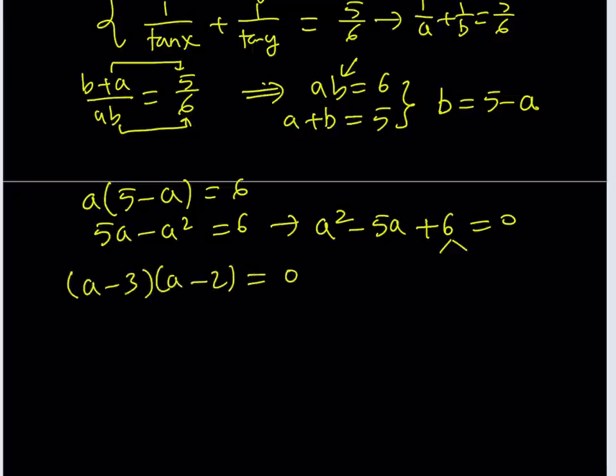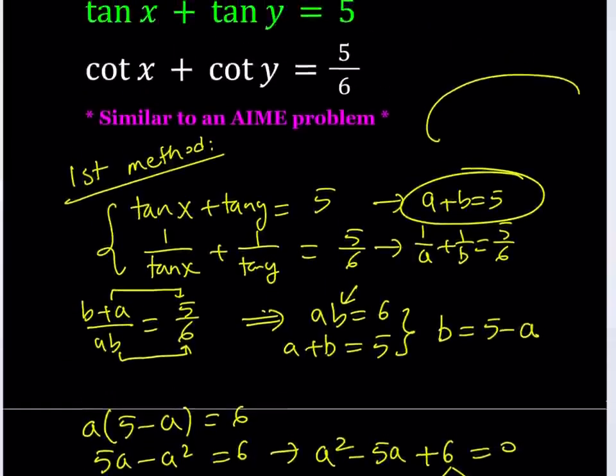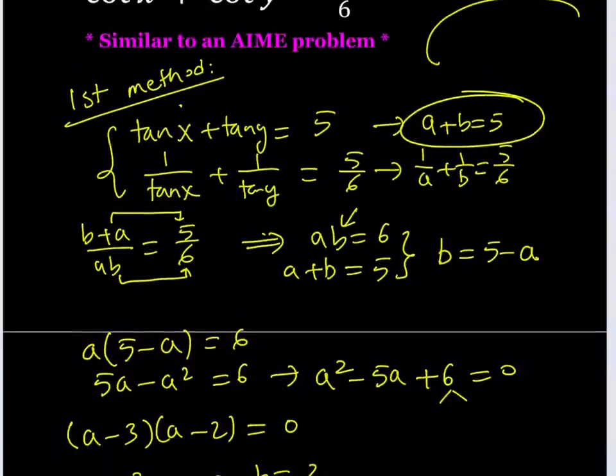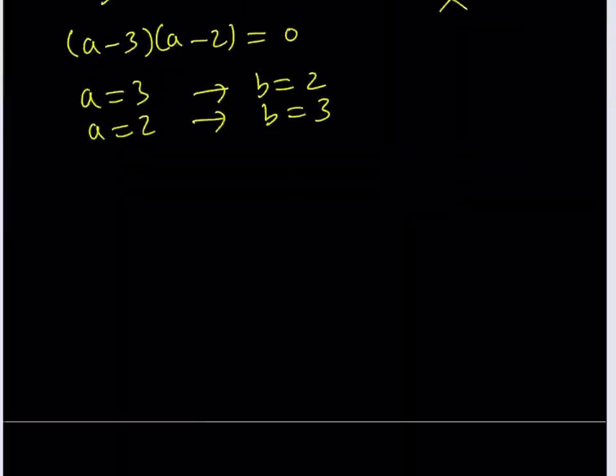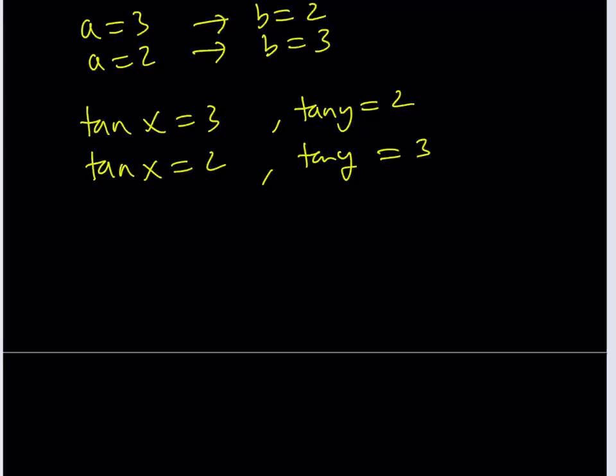From here, even though we're just getting the a values, the b values depend on the a values, and a and b are kind of interchangeable. So we get a = 3, which implies b = 2, or a = 2, which means b = 3. Now let's go ahead and back substitute. We said that tan x = a and tan y = b. So this means that tan x = 3 and tan y = 2, or vice versa: tan x = 2 and tan y = 3.